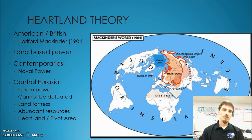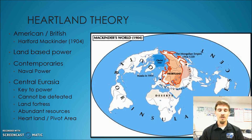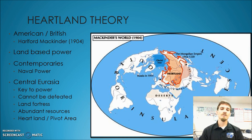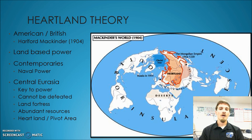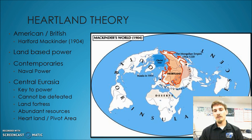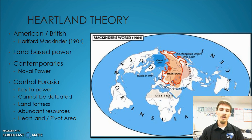Not only did it provide a tremendous amount of space to buffer yourself against invaders, but it also has an abundance of resources. In the eastern portion of this heartland, east of the Urals, you have a tremendous amount of mineral resources, natural gas and oil. To the western portion, especially moving into Poland and Ukraine, you have a tremendous amount of fertile soil to grow crops on to feed your population. He believed that this heartland space would be key to global power and global domination. At this time, the country that controlled most of this territory was Russia.